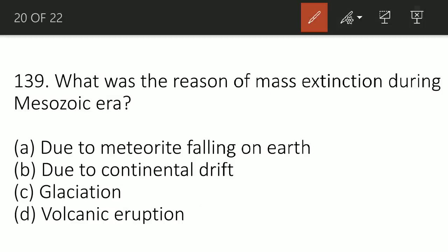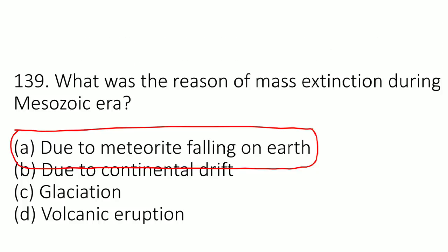What was the reason of mass extinction during Mesozoic era? The correct option is option number A: due to meteorite falling on earth. When the meteorite fell on earth, there was mass extinction.